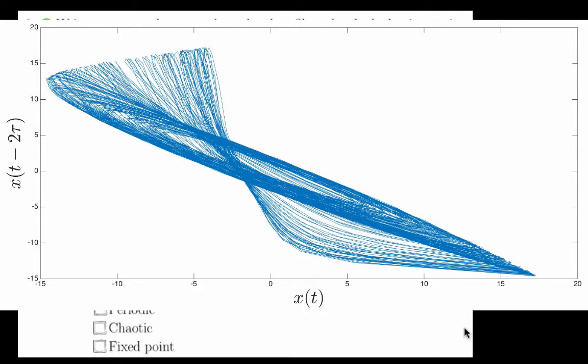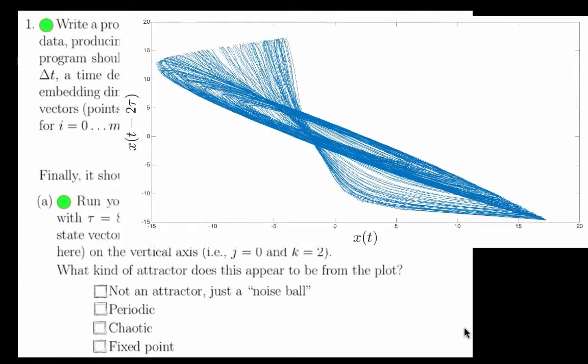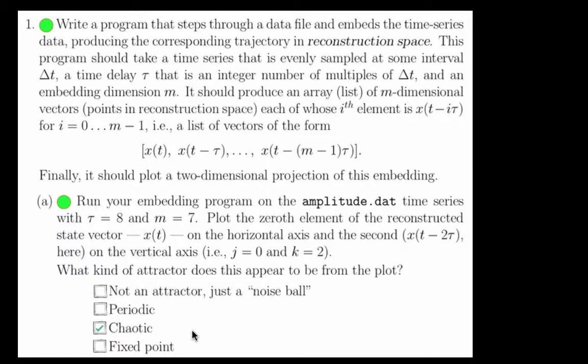we get the following plot. This object does appear to be a chaotic attractor, so the answer to part A is chaotic.